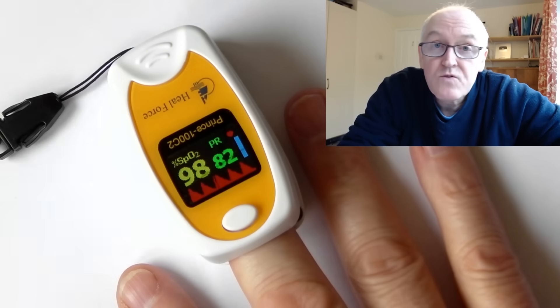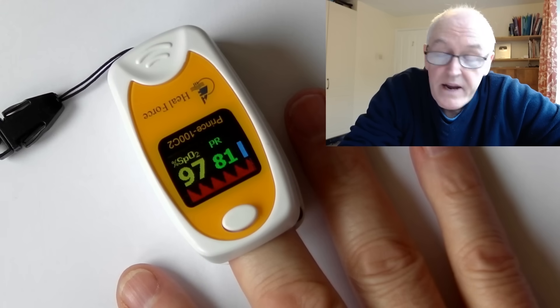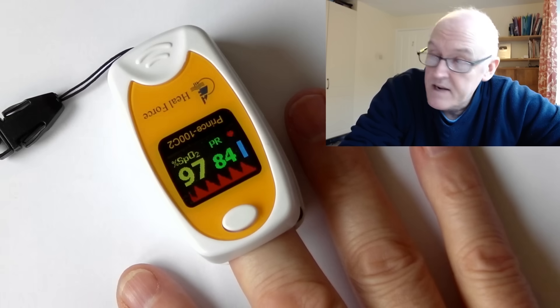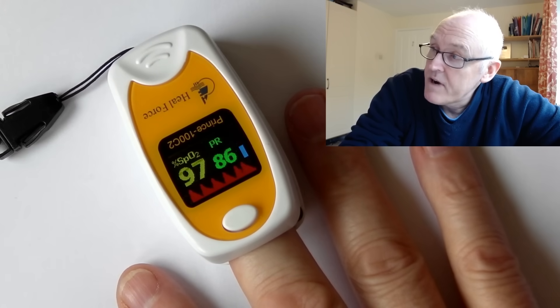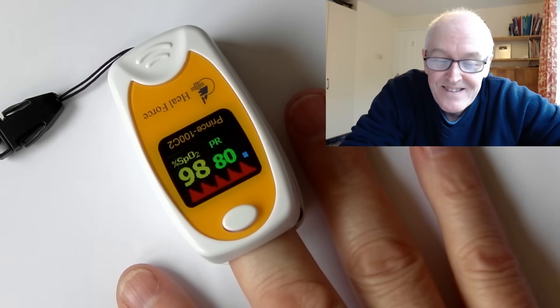That red line there is the pulse waveform as it goes through your fingers, which is also quite useful to see. If someone's got an irregular heart rate, you can see that the red graphic is also irregular. So 97 sats, 85 heart rate, not bad for the relatively stressful situation of talking to you.